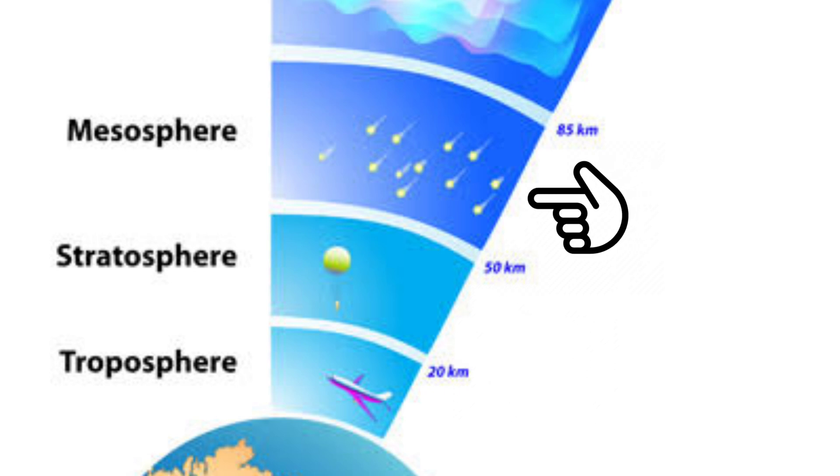The mesosphere extends from 50 to 85 kilometers above the Earth's surface. It protects the Earth from the impact of space debris.